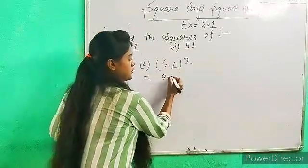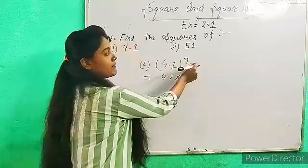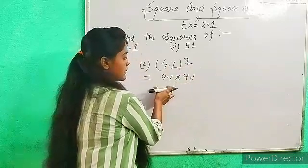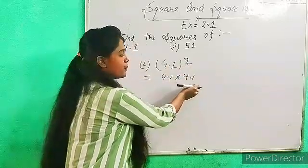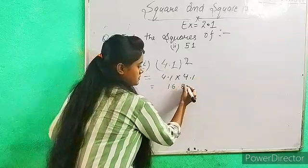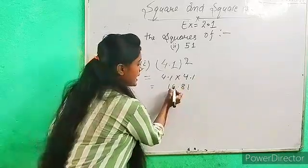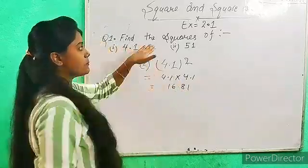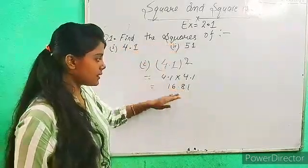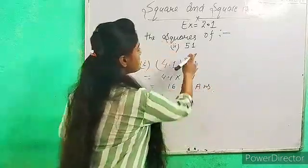4.1 into 4.1, that is 4.1 to power 2, which means 2 times multiply: 4.1 into 4.1. Then we get 16.81. This is how to do the square. Find the square — what is the square of 4.1? The answer is 16.81.